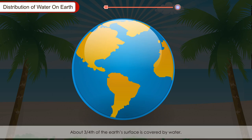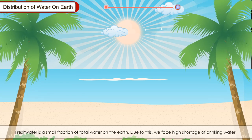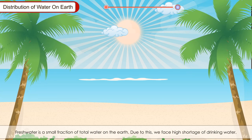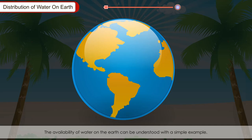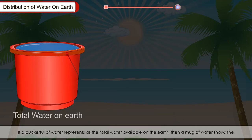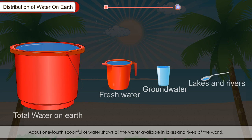Distribution of water on earth. About three-fourths of the earth's surface is covered by water, but most of this water is available as saline water in oceans and seas. Fresh water is only a small fraction of the total water on earth, so we face a high shortage of drinking water. If a bucket of water represents the total water on earth, then a mug shows the total fresh water, a glass shows the water available as groundwater, and about one-fourth spoonful shows all the water in lakes and rivers. This means we should use water as wisely as possible.